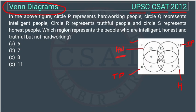Now what we have to do: we have to find which region represents people who are intelligent, honest, and truthful. So we have to find which region is in circles Q, S, and R — in all three — but not hardworking, meaning it should not be in circle P.